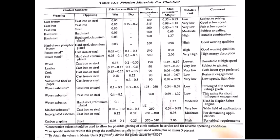Now let us look at friction materials for clutches, their coefficient of friction in wet and dry conditions, operating temperatures, maximum pressures, cost, and suitability. For cast iron on cast iron contacting surfaces, the coefficient of friction is 0.05. Common wearing materials include cork, asbestos. If data is not provided, you can assume values by referring to table 13.4. Let us now go to a problem.